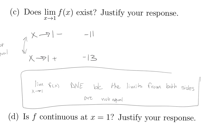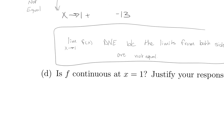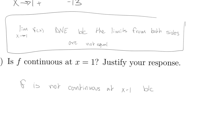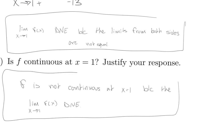For our last part of this problem, the explanation is the same kind. F is not continuous there because the limit does not exist — the limit as x approaches 1 of f of x does not exist.